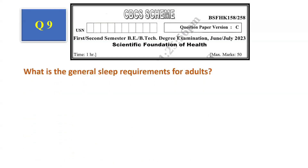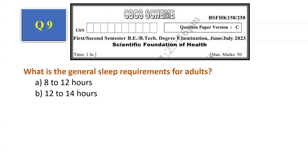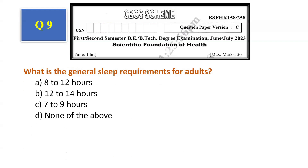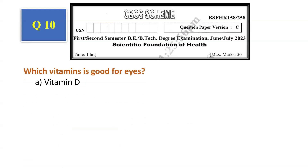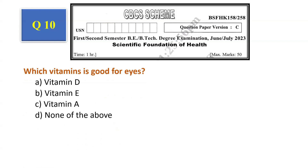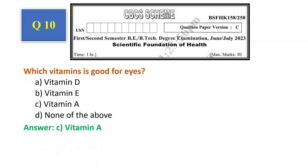Question number 9: What is the general sleep requirement for adults? Options: 8 to 12 hours, 12 to 14 hours, 7 to 9 hours, none of the above. The answer is 7 to 9 hours, that is option C. Question number 10: Which vitamin is good for eyes? Options: Vitamin D, Vitamin E, Vitamin A, none of the above. The answer is Vitamin A, that is option C.